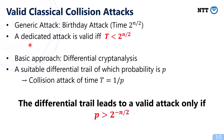Very roughly speaking, when we have a suitable differential trail of which probability is p, then we can mount a collision attack of time 1 over p. This attack is valid if and only if the time complexity 1 over p is less than 2 to the power n over 2. This means the differential trail leads to a valid attack only if the differential probability p is greater than the birthday bound 2 to the power minus n over 2.